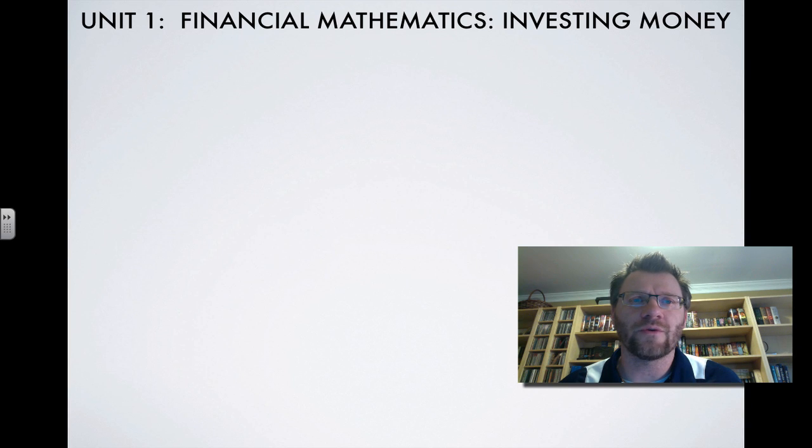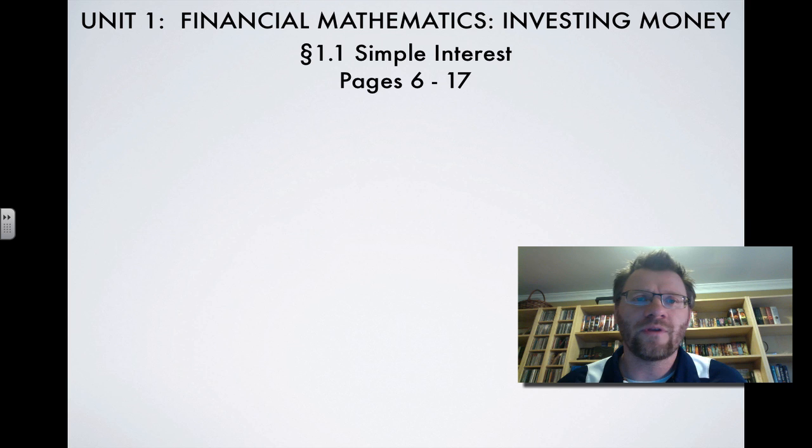Alright, we're looking at Unit 1 here, which is Financial Mathematics, called Investing Money. 1.1 is called Simple Interest, and that's on pages 6 to 17 in your textbook.